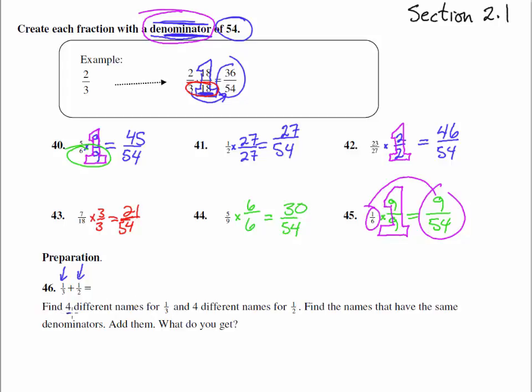So if we take one-third and it says we'll find four different names for one-third. So one-third could be two-sixths, three-ninths, four-twelfths, five-fifteenths. Let's just do one more for good measure, six-eighteenths. There you go.